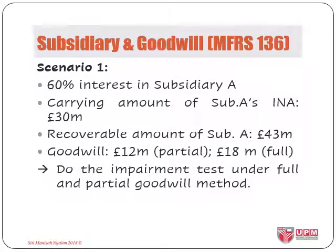The first question is about subsidiary and goodwill. The focus is about the recognition of the impairment loss and how we share the loss with NCI. Here we have a parent owning 60% interest in subsidiary A with carrying amounts of the identifiable net assets of £30 million and recoverable amounts of £43 million. Goodwill is at £12 million using partial goodwill method and at £18 million using full goodwill method.